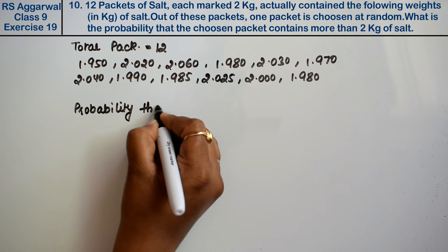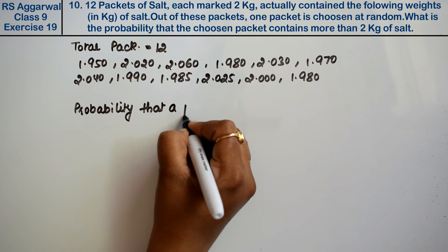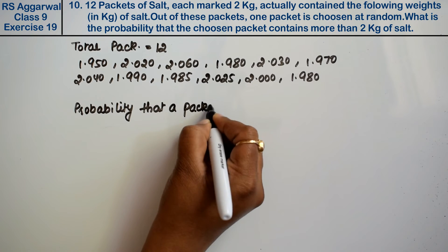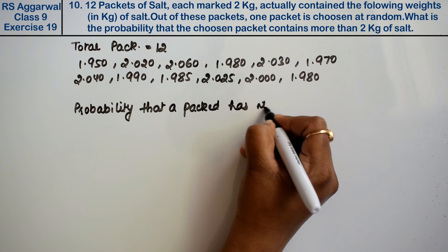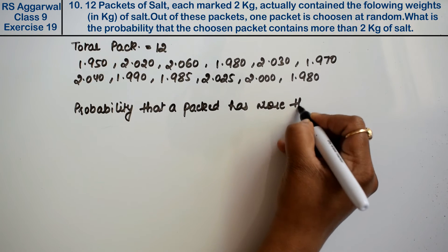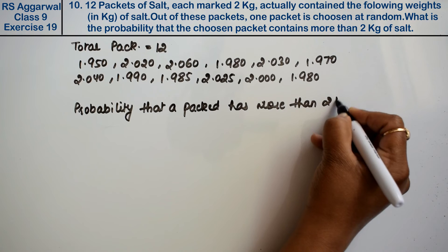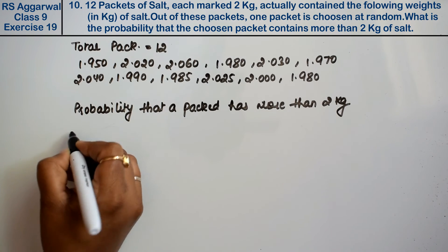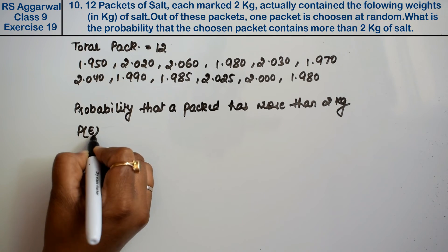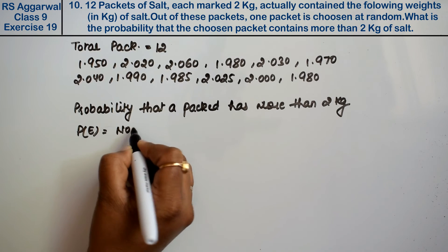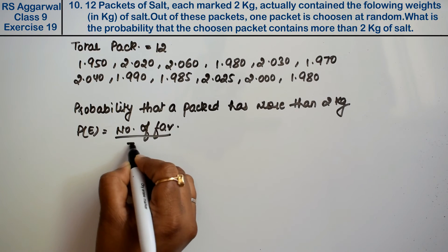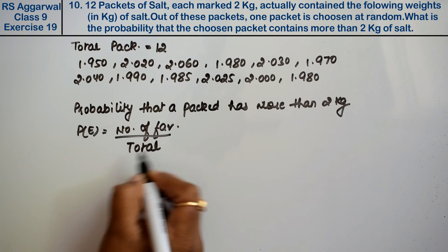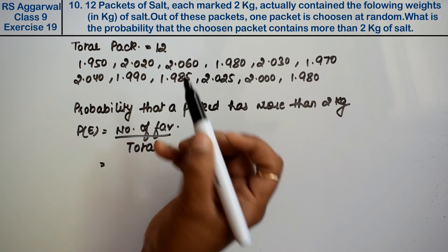Probability that a packet has more than 2 kg. The formula for probability is number of favorable items divided by total. The favorable cases are those with more than 2 kg.